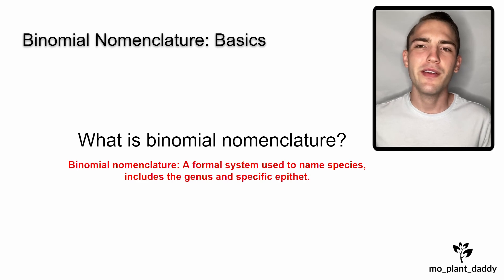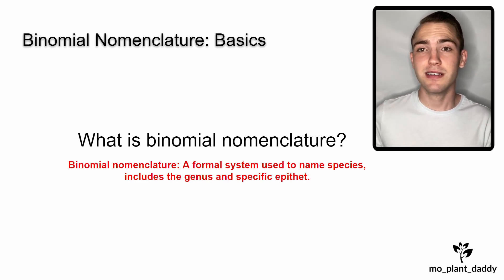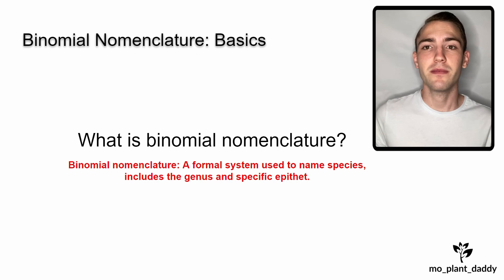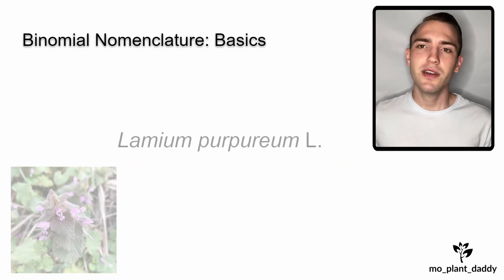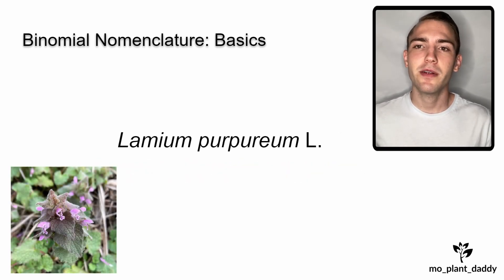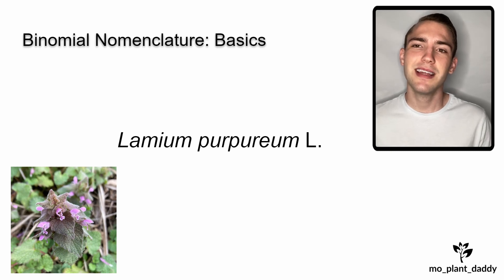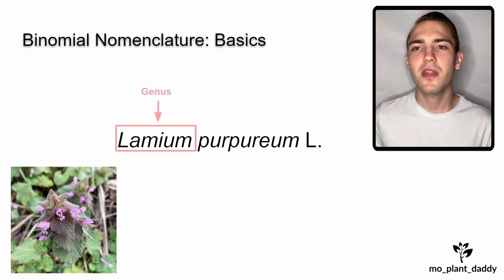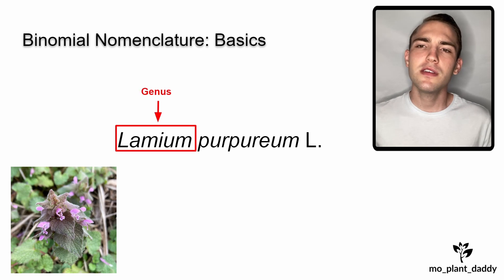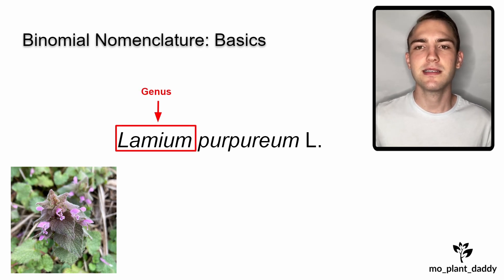You might be wondering, how do I distinguish between the genus and the specific epithet in binomial nomenclature? Well, let me show you an example with Lamium purpureum L, otherwise known as dead nettle, which is a super common lawn weed. The first part of the Latin binomial will be what genus the species is a member of. In this case, it is Lamium.